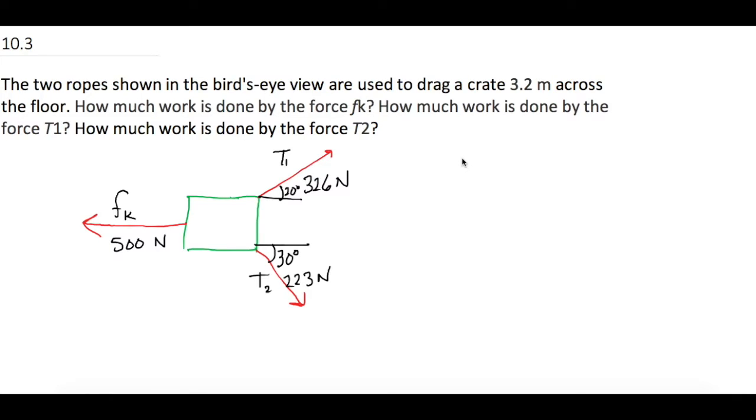The ropes shown in the bird's eye view are used to drag a crate 3.2 meters across the floor. How much work is done by the friction force, how much work is done by force T1, and how much work is done by force T2?